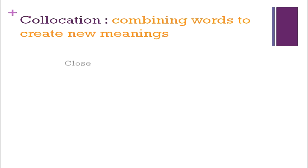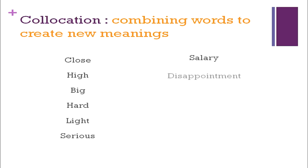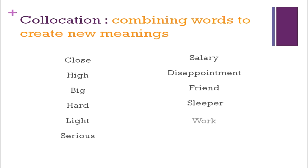Next is collocation — combining words to create new meanings. Consider the words: close, high, big, hard, light, serious, paired with salary, disappointment, friend, sleeper, work, endless. These words have their own meanings, but when you combine 'light' with 'sleeper' it becomes 'light sleeper' — meaning a person who wakes at the slightest noise. That is a new meaning. This is collocation. Similarly: serious illness, high salary. We can combine two words to create a new meaning.